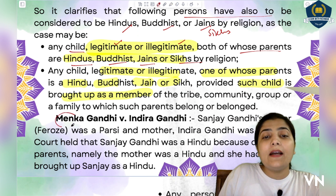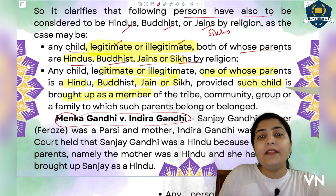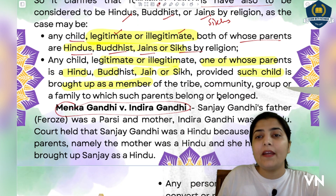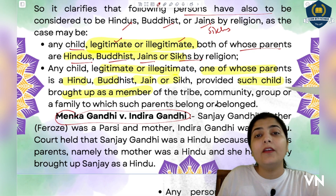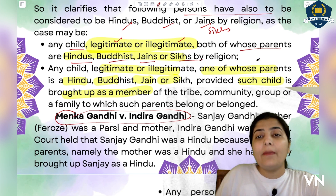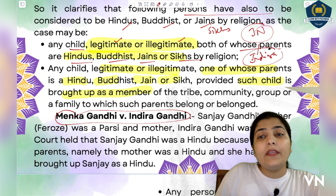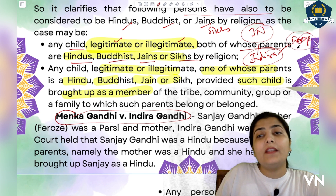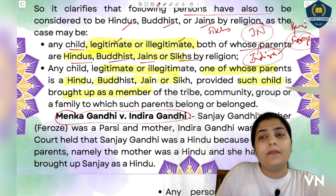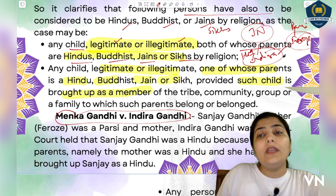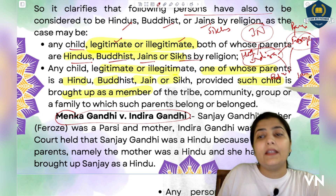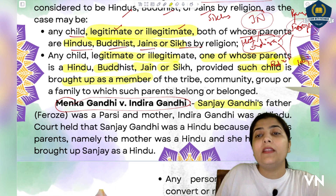There is a very important case here: Menka Gandhi versus Indira Gandhi. I hope the Gandhi family tree is becoming clear. Jawaharlal Nehru's daughter was Indira Gandhi. Indira Gandhi's husband was Feroze Gandhi, and Feroze Gandhi was a Parsee. His wife Indira Gandhi was Hindu. Their sons were Rajiv Gandhi and Sanjay Gandhi.